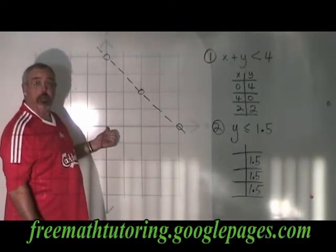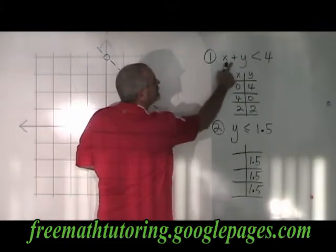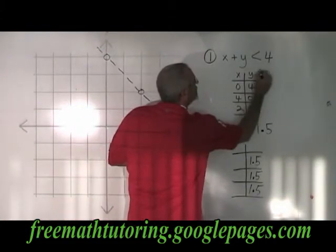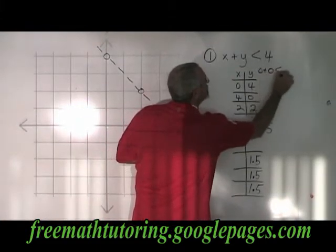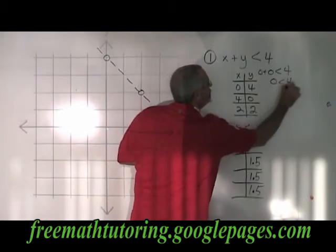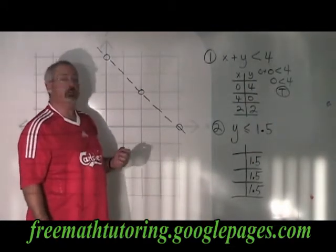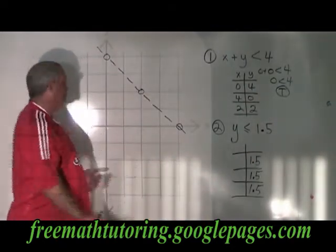I'm allowed to use 0, 0 as my test point. So I plug 0, 0 into this equation, and I get 0 plus 0 less than 4. It simplifies to 0 less than 4, which is true. True means towards, so I shade from my line towards my test point.